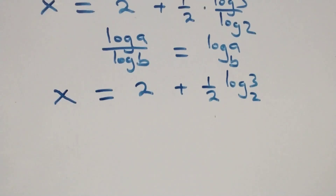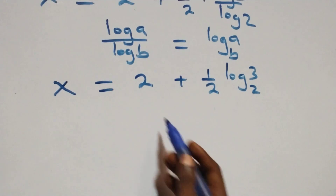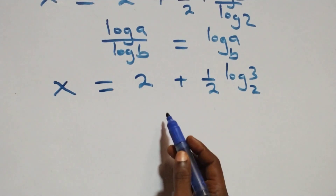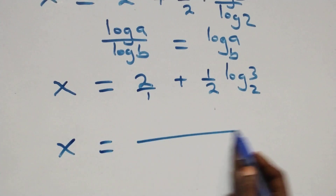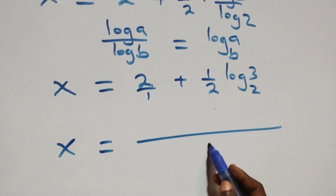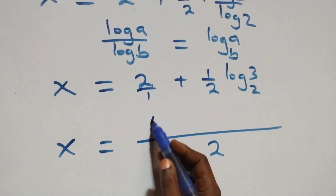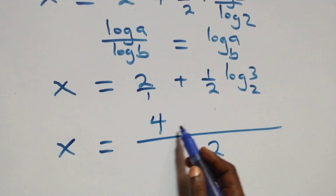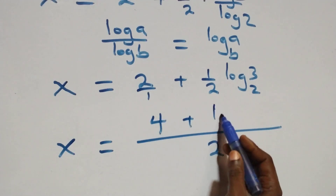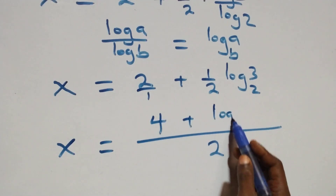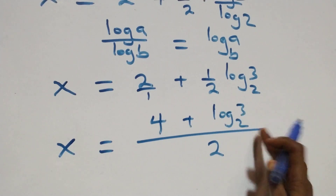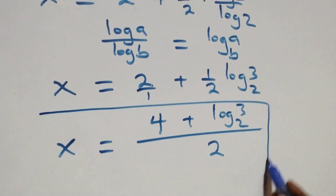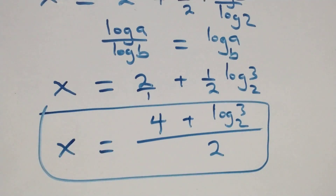And also from here, we can bring these fractions together. This is 2 over 1, so we have x equals to 2, and here this becomes 4, plus log 3 base 2. That is, the value of x here is 4 plus log 3 base 2, all over 2.